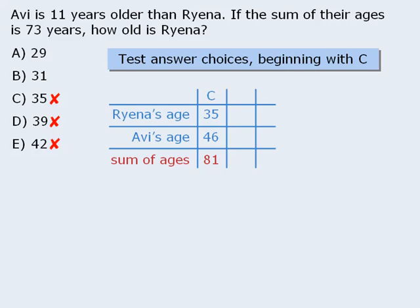Notice that after testing just one answer choice, we are already halfway to finding the correct answer. At this point, which answer choice should we test next? It does not matter which one we test next, because we are only going to test one more answer choice. If we test answer choice A and it works, then we have found the correct answer. If it does not work, then we will know that answer choice B must be correct, and we will select it and move on.